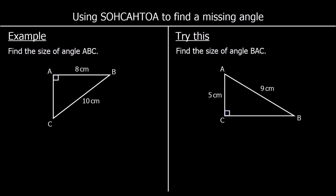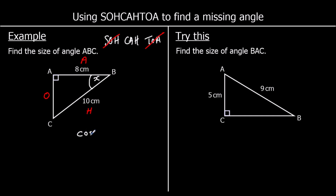So this question says find the size of angle ABC — that's this angle here. The first step is to label the triangle. The hypotenuse is the longest side, opposite the right angle. The opposite is opposite the angle we're using. And the adjacent is in between the right angle and the angle. We use one of our ratios — sin, cos, or tan. We want the one with A and H in. We know A and H; we don't know O and we're not trying to work it out. So the one with A and H in — or without O — is CAH.